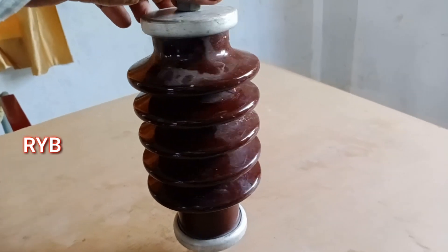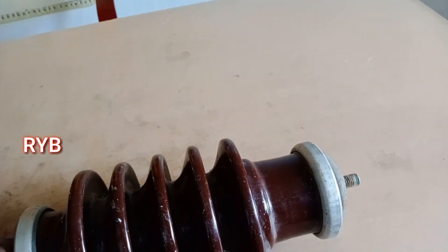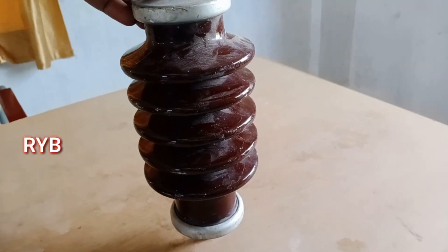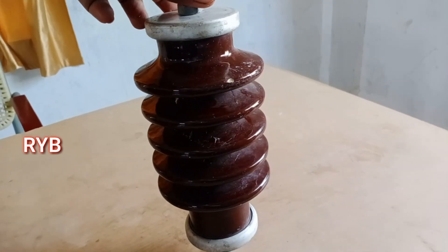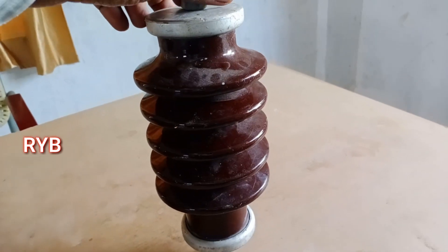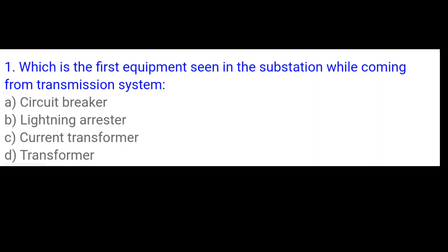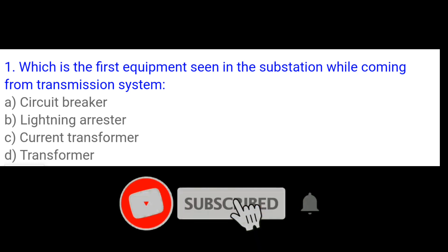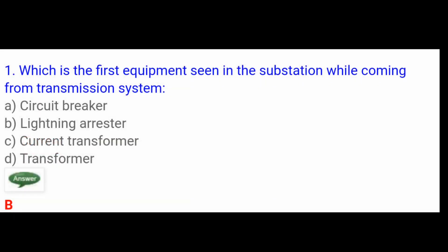Under normal voltage, the zinc oxide acts as a high resistance. Whenever lightning occurs, that voltage breaks the resistance of zinc oxide, and it acts as a lightning arrester, diverting the surge to ground. The lightning arrestor is the first equipment seen in the substation coming from the transmission system. This is the importance of the lightning arrestor. Please subscribe and press the bell icon to get more updates. Thank you.